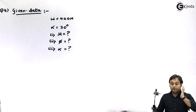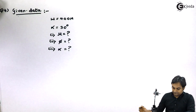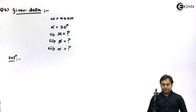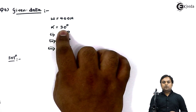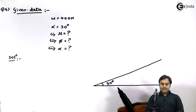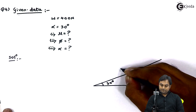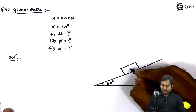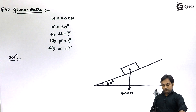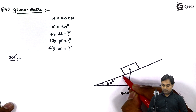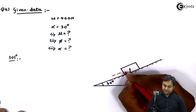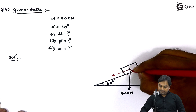Now let us try to get the solution. Since alpha is equal to 30 degrees, I will draw an inclined plane. The weight of the block is 400 Newton acting downwards. Since weight is acting downward on an inclined plane of 30 degrees, we have two components of weight: one parallel to the plane and the other perpendicular to the plane.